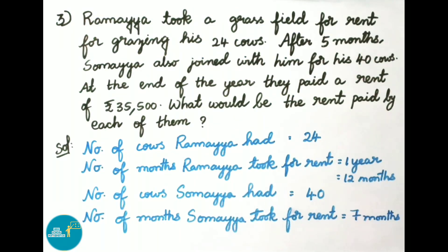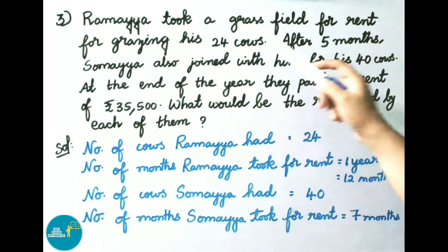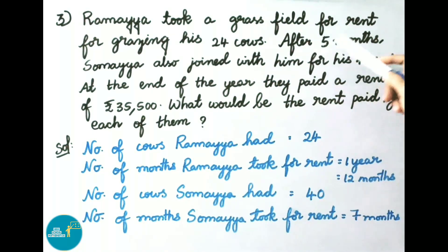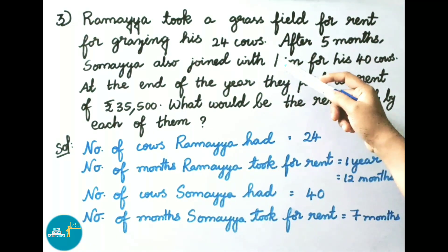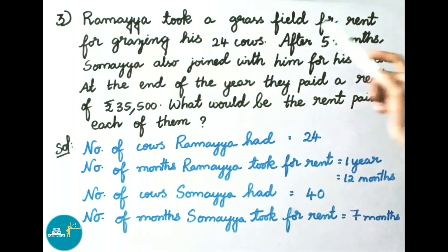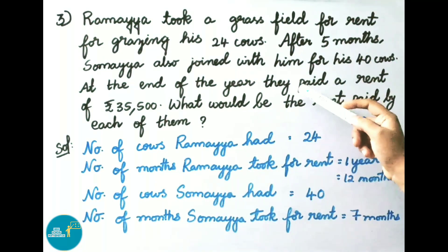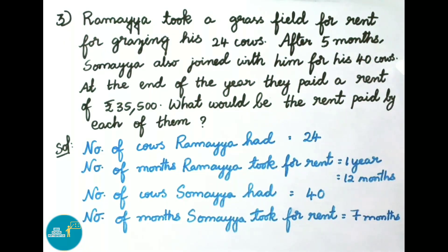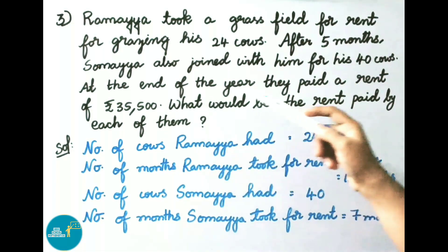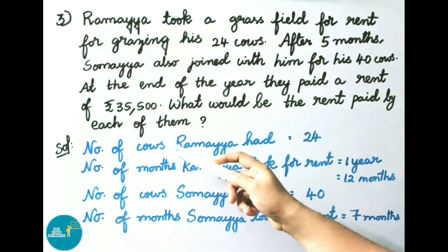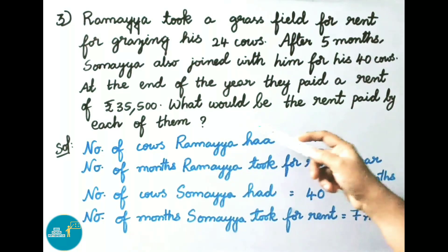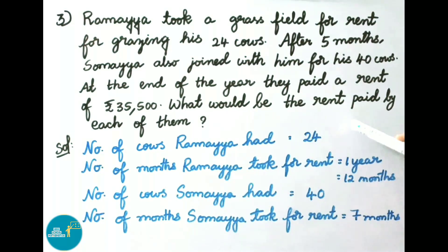Question number 3: Ramaya took a grass field for rent for grazing his 24 cows. After 5 months, Somaya also joined with him for his 40 cows. At the end of the year they paid a rent of 35,500 rupees. What would be the rent paid by each of them? Let us see the solution.